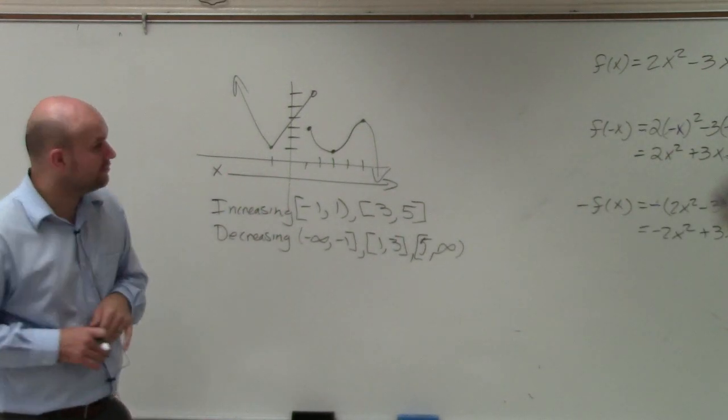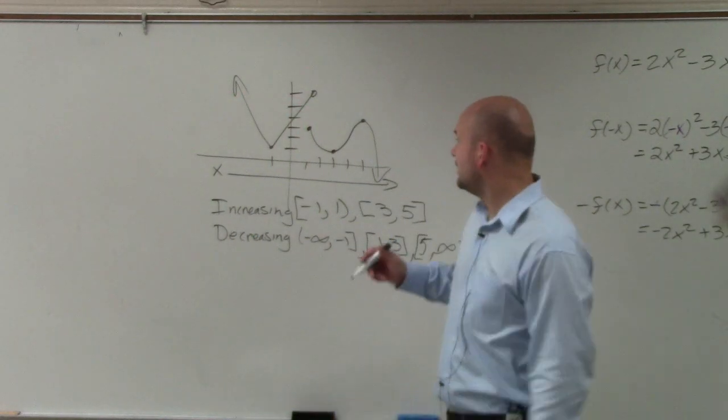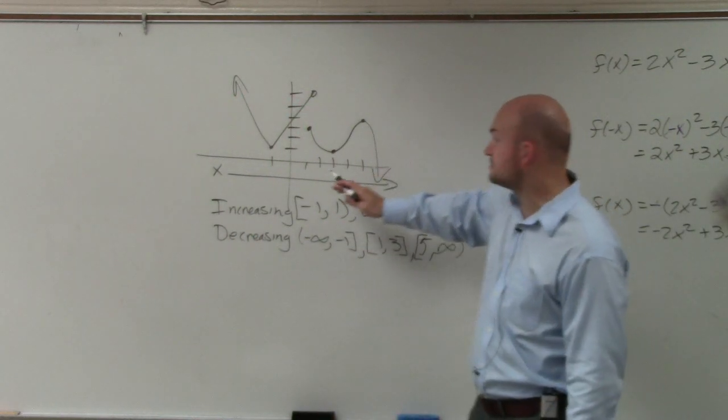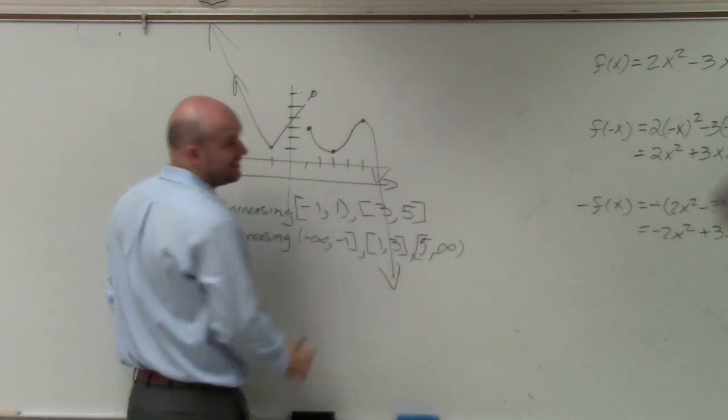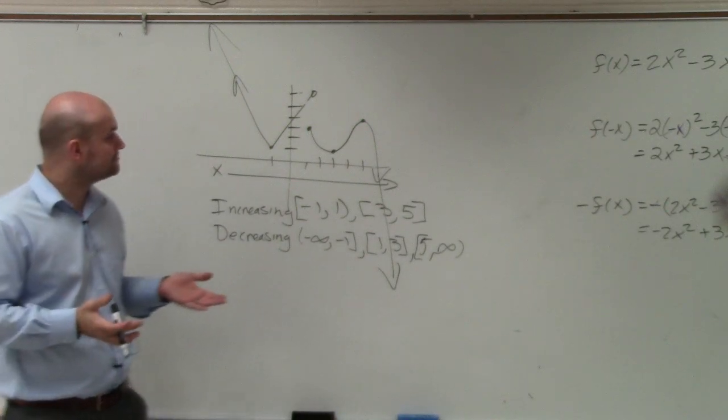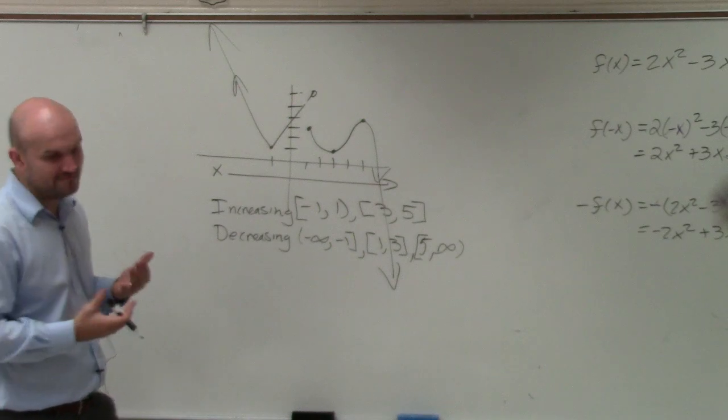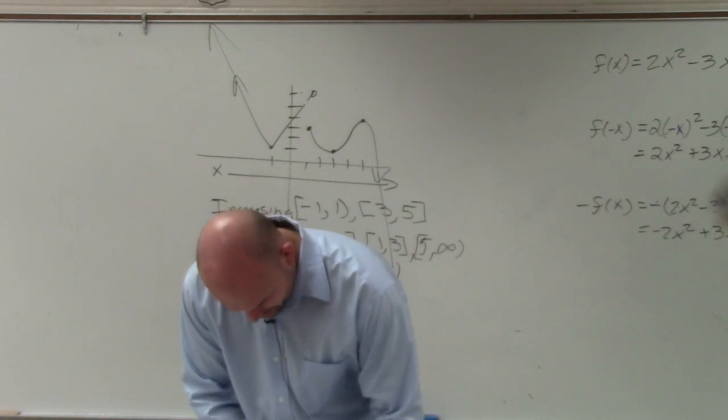As far as local min and local max, relative min, relative max, absolute max, absolute min, you can see that there's no absolute max or absolute min because this graph continues infinitely this way and infinitely that way, right? So there is no absolute min or max. We're only going to be looking at relative min and relative max.